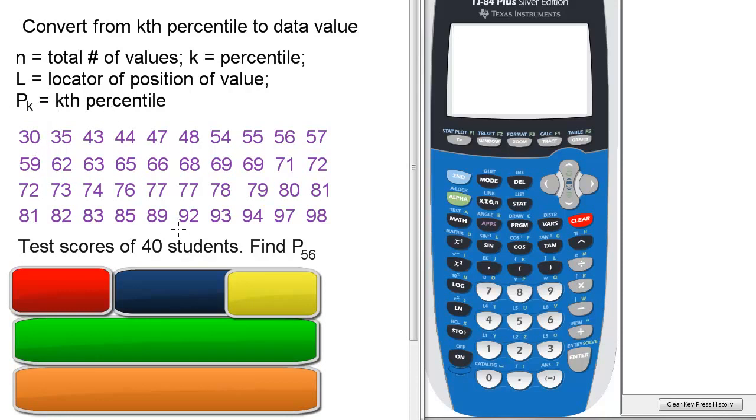Here's the data for the 40 students. We want to find p sub 56. Fortunately, it's all been sorted in ascending order. That's great.